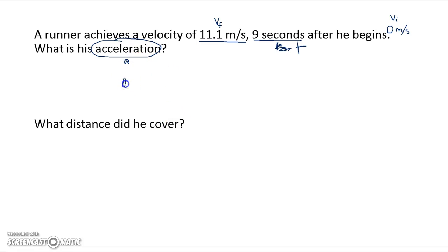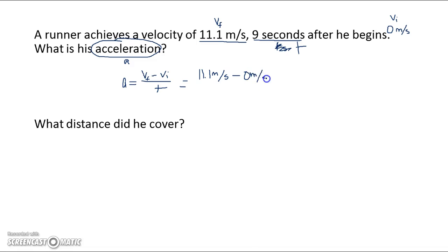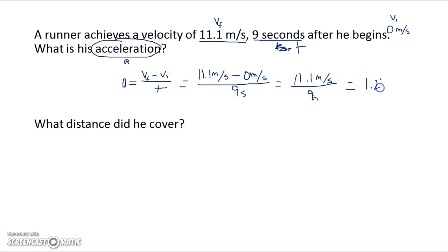So we're looking for acceleration. Remember, acceleration is equal to vf minus vi over t. So we just plug that in: vf is equal to 11.1 meters per second, vi is equal to 0 meters per second, and the time is equal to 9 seconds. So 11.1 minus 0 is 11.1 meters per second, and we need to divide that by 9 seconds. We plug into our calculator 11.1 divided by 9, and that gives us 1.2333 repeating — so 1.23 meters per second squared. And that's your acceleration.